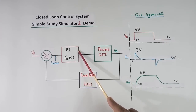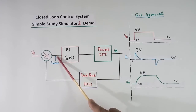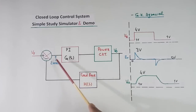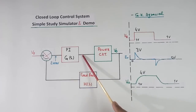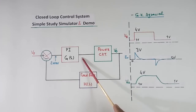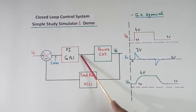For example, suppose this output is 5 volts and error is zero — it will remain 5 volts, it will not change. When error becomes positive, this 5 will start increasing. When error becomes negative, this 5 will start decreasing. And when it becomes zero, it will remain in steady condition.